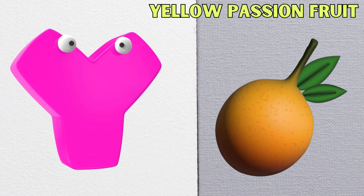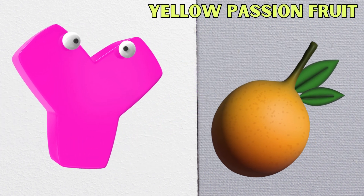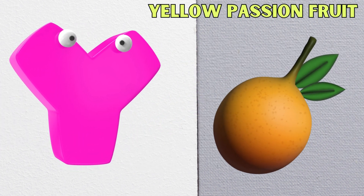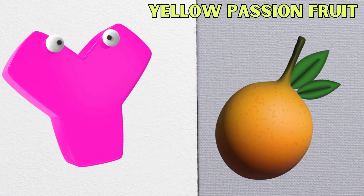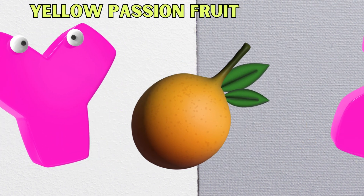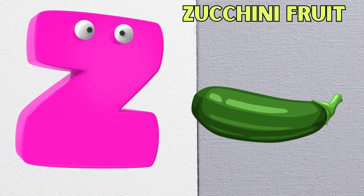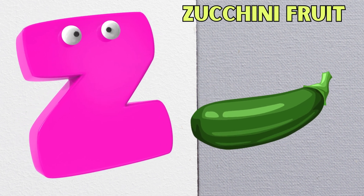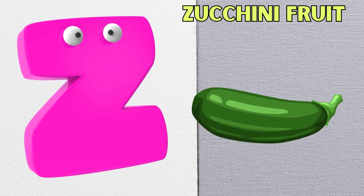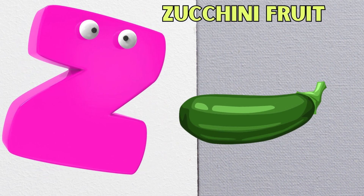Y is for yellow passion fruit, y-y-yellow passion fruit. Z is for zucchini fruit, z-z-zucchini fruit.